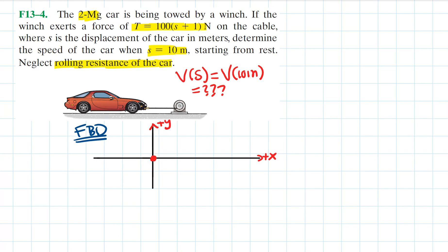The vehicle has a weight due to its mass, and there is a normal force between the road surface and the vehicle. We are told to neglect rolling resistance, so we do not consider friction. We do have the tension in the cable caused by the winch pulling the car to the right, and this tension as a function of position is a variable force: T(s) = 100(s + 1).